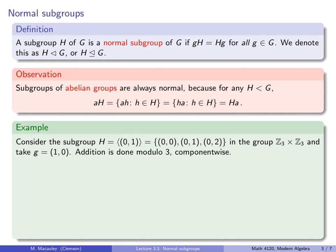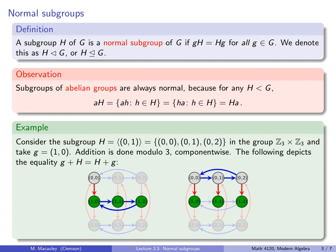So here's an example, and I will include a picture as well. Consider the subgroup generated by (0,1) in Z3 cross Z3. It's, again under addition, the three elements (0,0), (0,1), and (0,2). And let's take g to be this element (1,0). Addition, of course, is done modulo 3, component-wise. So this depicts the equality of the left coset and the right coset. So recall that the left coset, let's start at the identity element, and then add g, and then follow all of the arrows in H, meaning all of the blue arrows, and you get these elements right here.